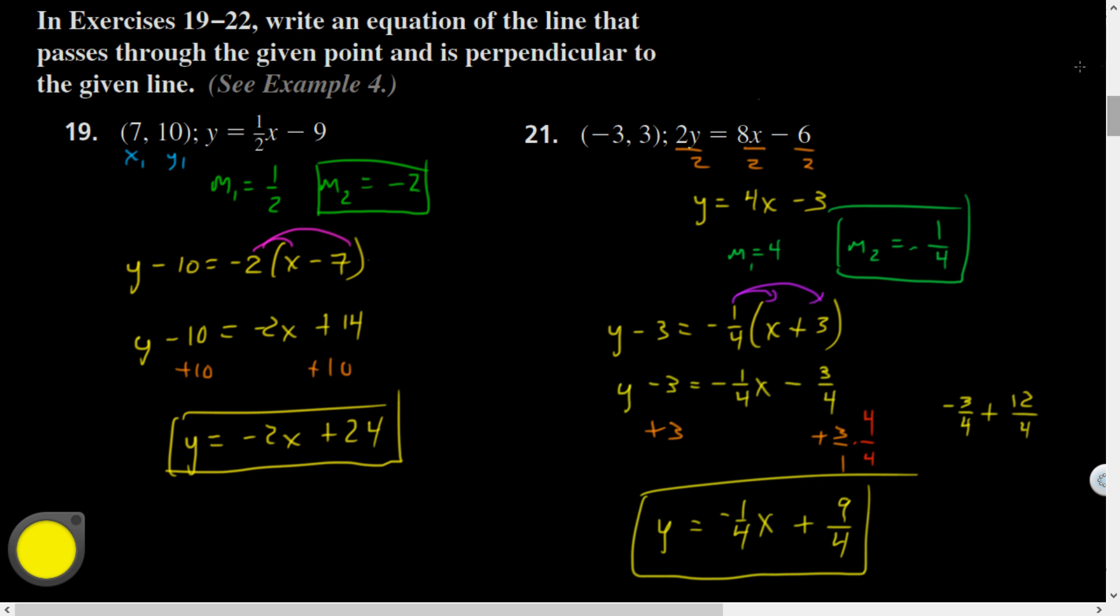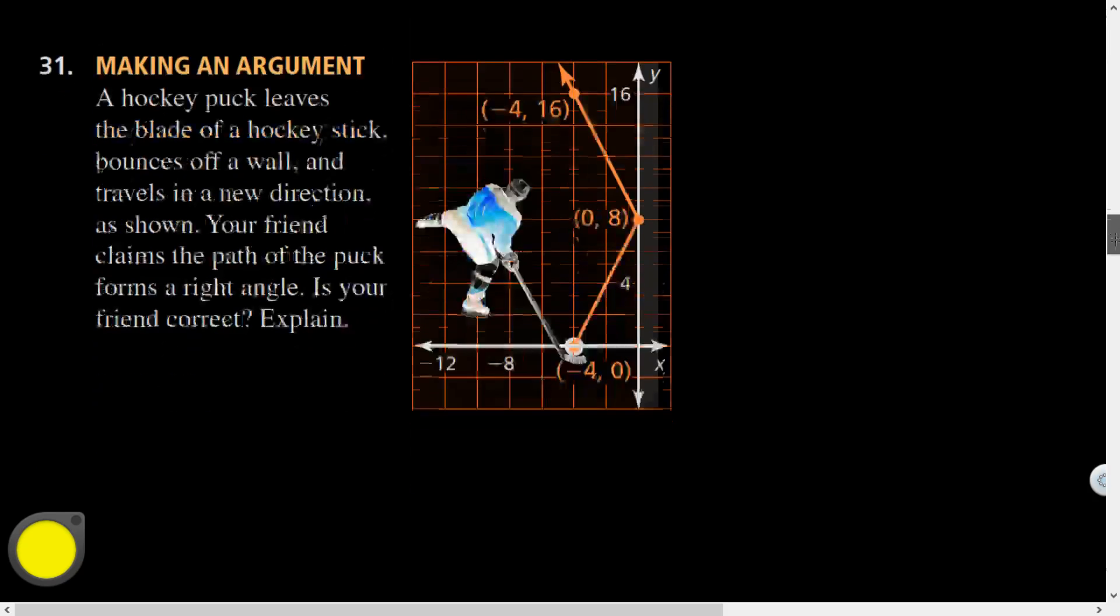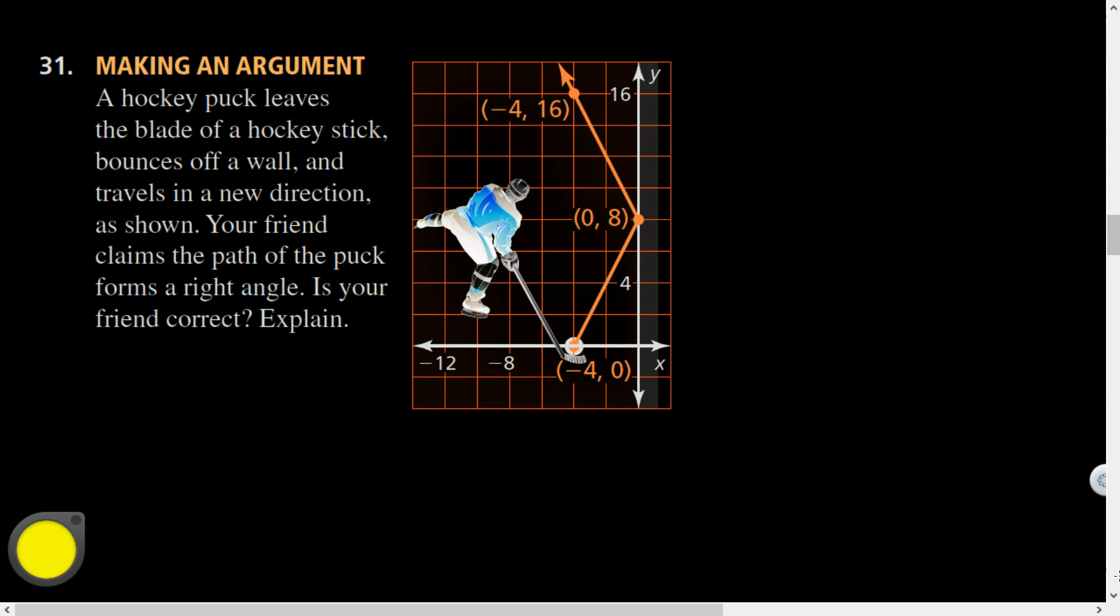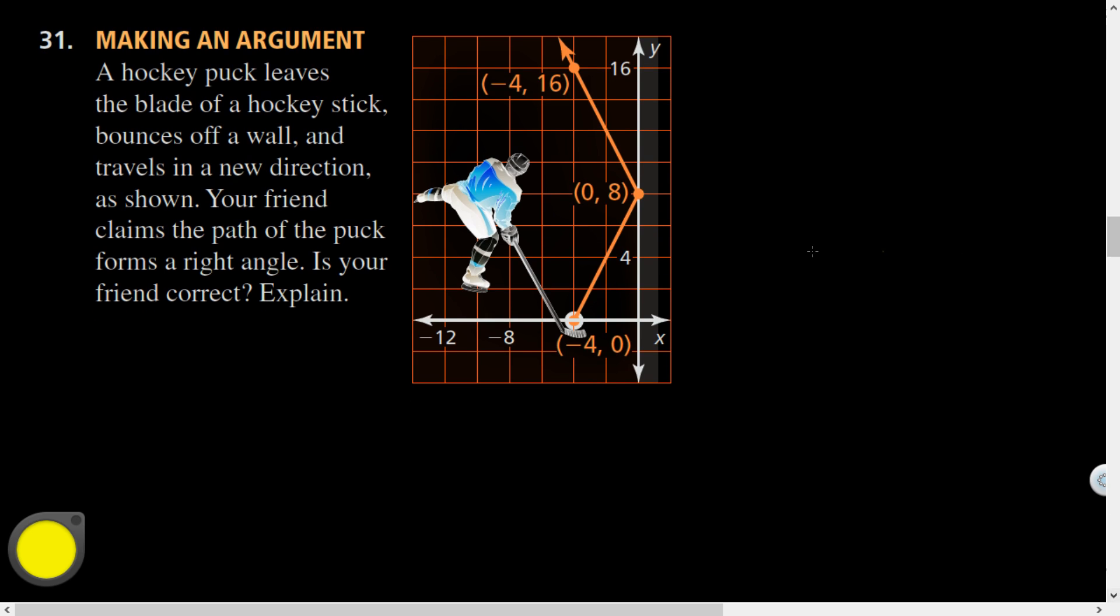So I'm going to have Y equals negative one fourth X, negative three plus 12 is the same as 12 minus three, which is nine fourths. There we go. So there's my equation. I'm not going to take the time to graph that one. I want to keep moving. Hey, a hockey puck leaves the blade of a hockey stick and bounces off a wall. It travels in a new direction as shown. Your friend claims the path of the puck forms a right angle. Is your friend correct? Explain.